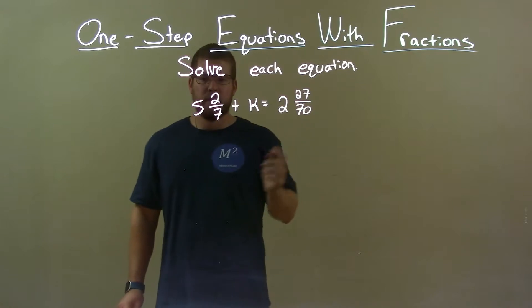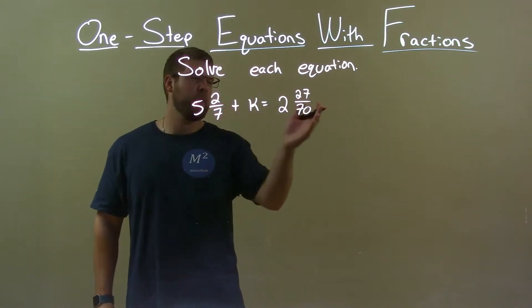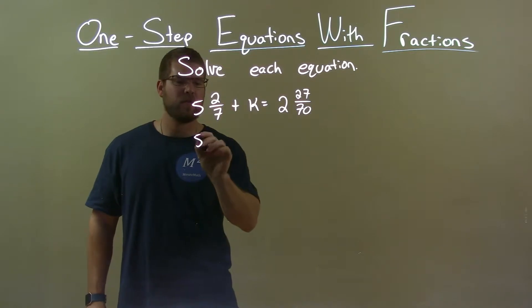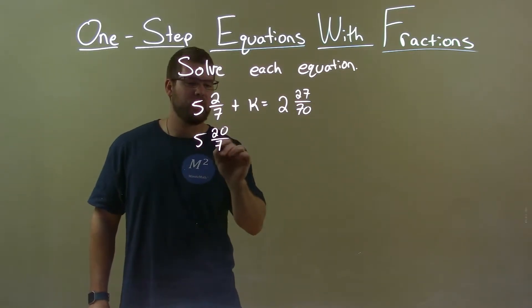Well, to have the same denominator, 5 and 2 7ths - we both want to have 70, so I can multiply this fraction by 10. So that's 5 and 20 over 70, same thing.